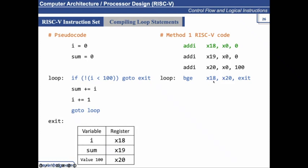So branch if greater than equal what? If the value of i, which is x18, is greater than x20, when this condition, when i becomes greater than 100, only then loop should exit. Otherwise, if this condition does not satisfy, it is going to execute the next instruction, which is sum plus equal i, which is x19, x19, x19, and x18.